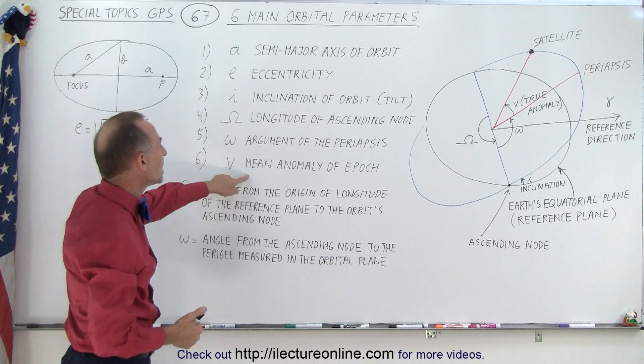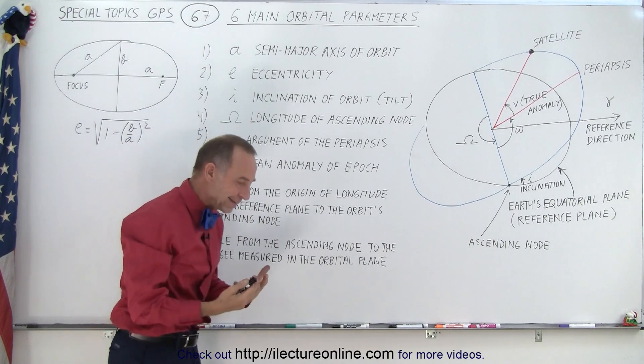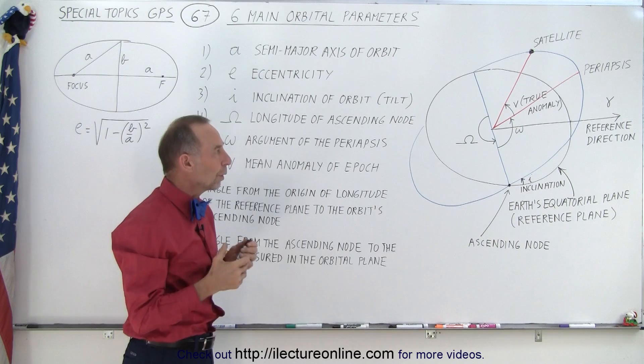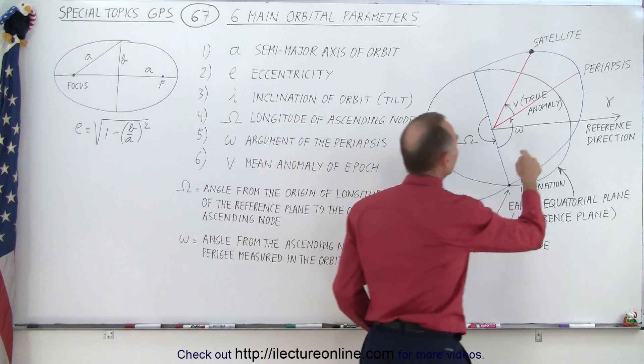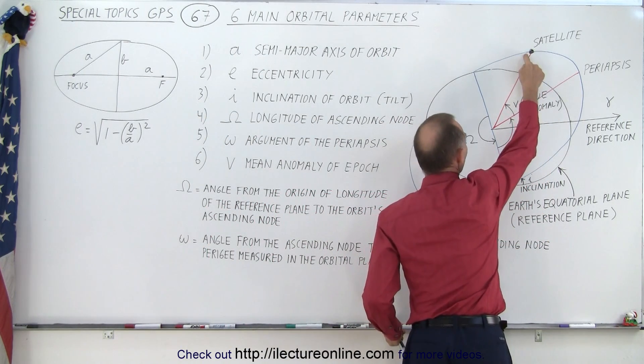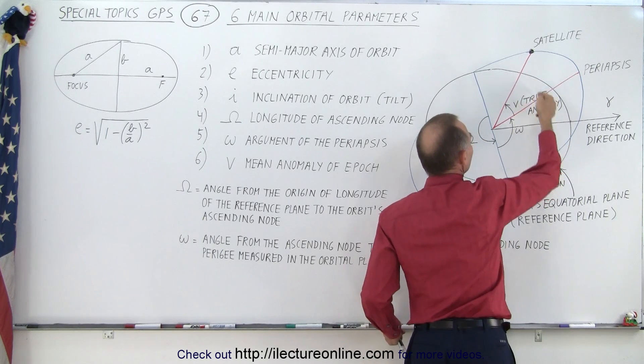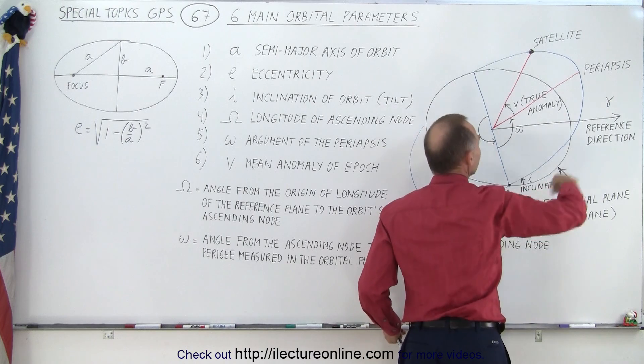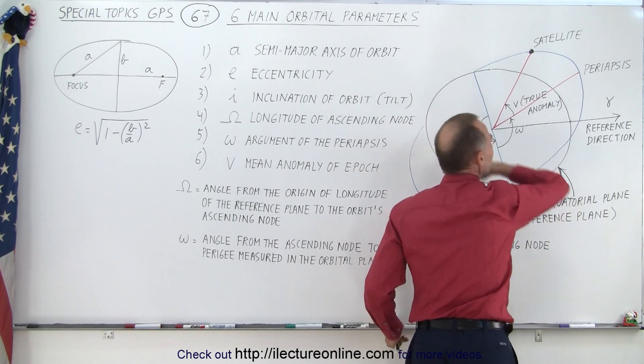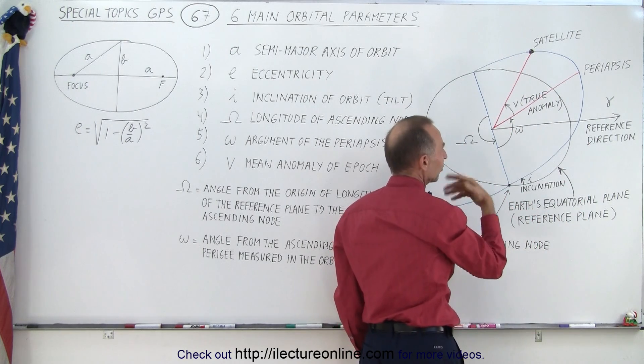And then finally, the mean anomaly of the epoch. Now epoch is a time, and so what we want to do here is understand where the satellite is at now, as compared to where the periapsis is, and so that distance would be a fraction of the entire period of the orbit of the satellite.